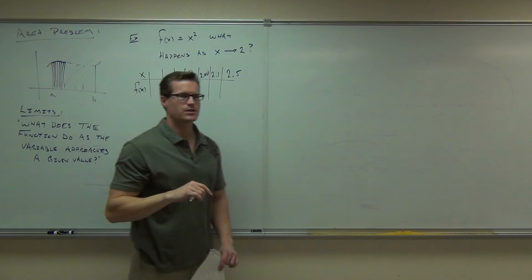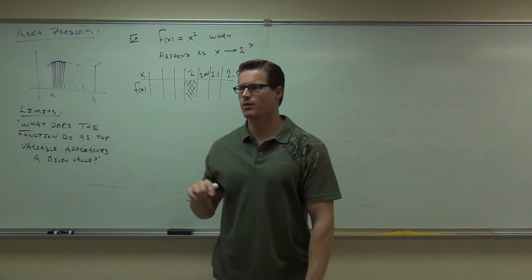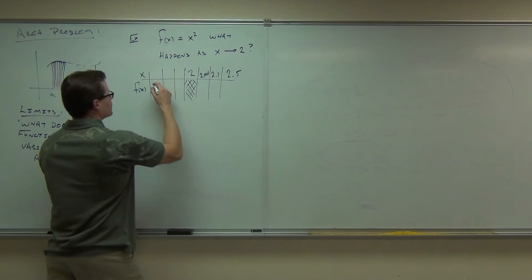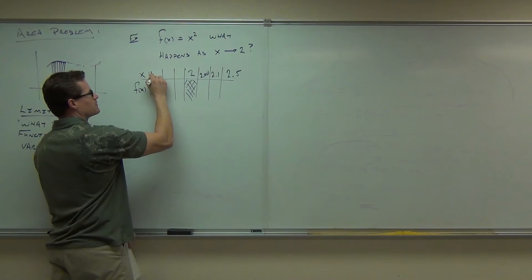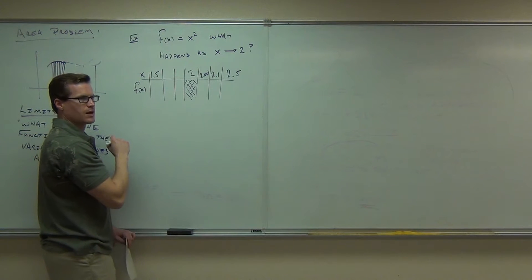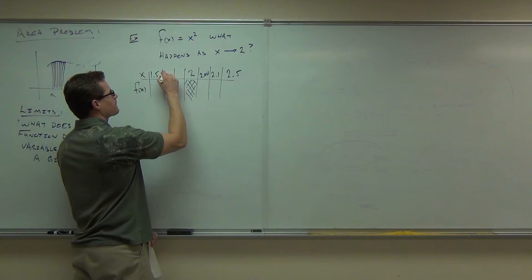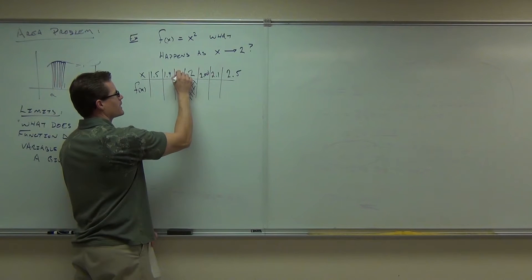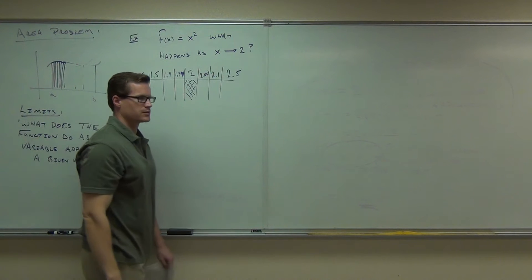Now, let's go the other way. Give me a number that's smaller than 2 that we want to work our way up from this way. Okay. Sure. How about we keep it kind of symmetrical. 1.5, I like that one. We'll do 1.9, and 1.999. How about that? Does that work for you?